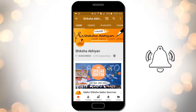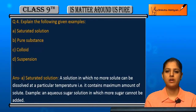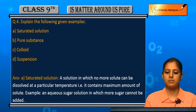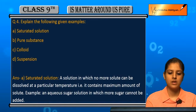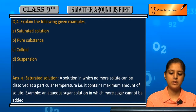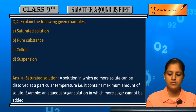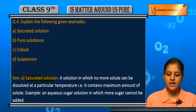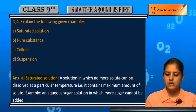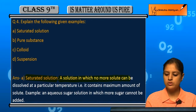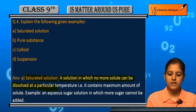Question number four: explain the following given terms with examples. Hume ye sari terms ko examples use karke explain karo. First hai: saturated solution. A solution in which no more solute can be dissolved at a particular temperature.